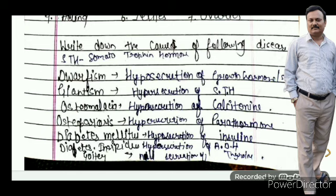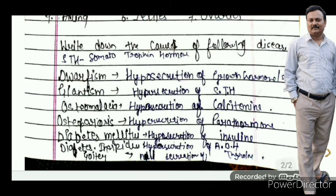Osteomalacia: hyposecretion of calcitonin hormone from the thyroid — this is what we call osteomalacia. Osteoporosis: hyposecretion of parathormone causes osteoporosis. Diabetes mellitus, also called sugar disease, is caused by hyposecretion of insulin hormone.